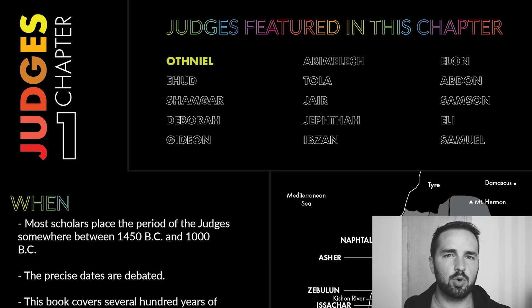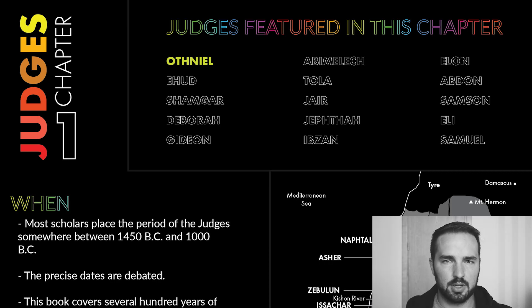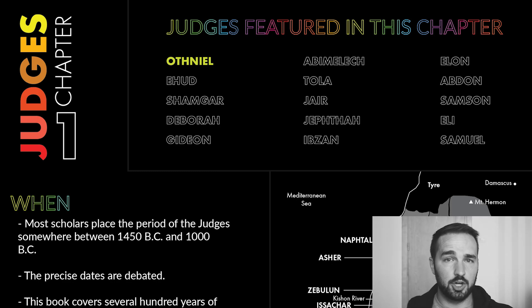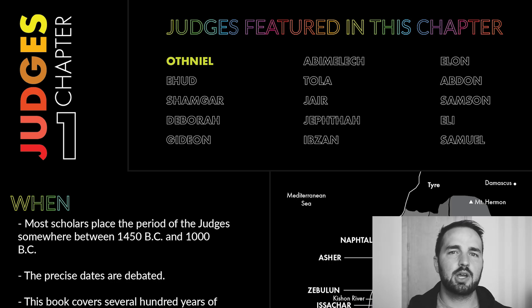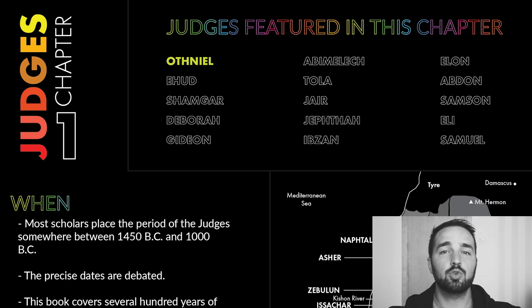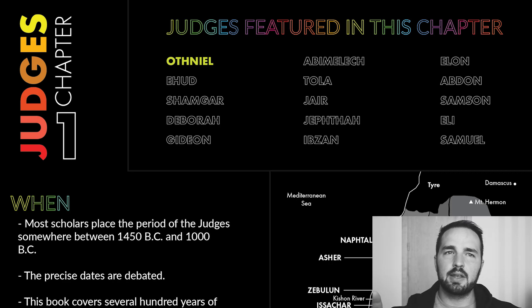The Judges will really begin — we'll start talking about them in basically chapter three. The first two chapters are kind of the setup for the book, the linking chapters between what finished in the book of Joshua and now linking into this period of the Judges. We'll also talk about a problem that arose because the conquest wasn't done the way that God wanted it to be done — the Israelites didn't follow through on it.